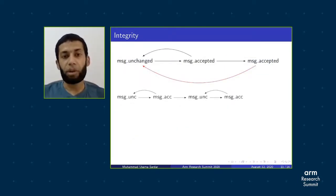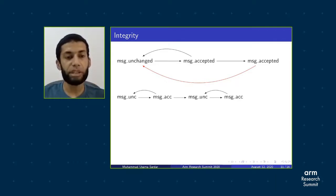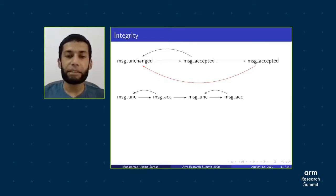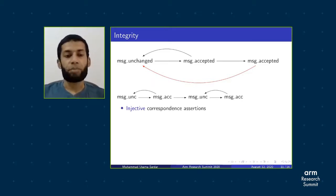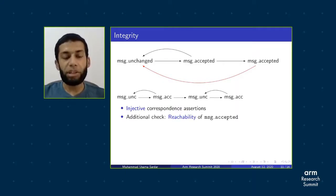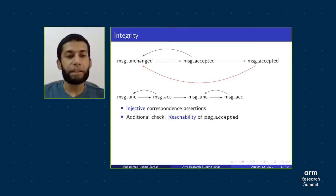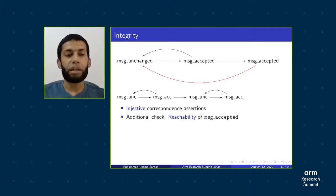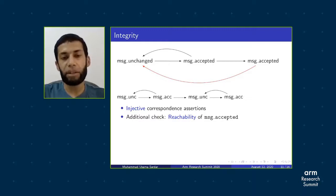The solution is that for each message that is accepted, there must be a corresponding distinct previous event of that message being unchanged. This ensures that for each accepted message in the future, there is a distinct earlier event for it. This is formalized as injective correspondence assertions. Additionally, we need to verify that the message-accepted event is actually reachable, because if a message is never accepted, the verification will still return true. Therefore, it is important to verify that the message-accepted event is actually reachable.